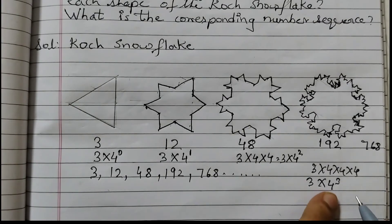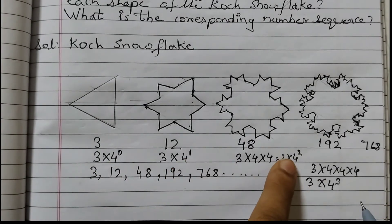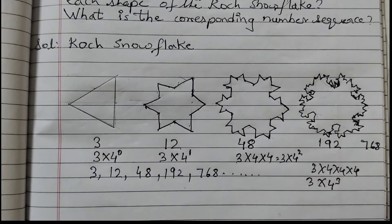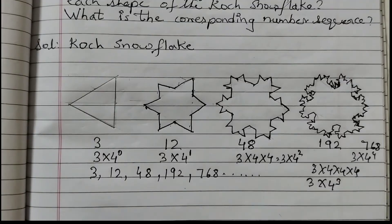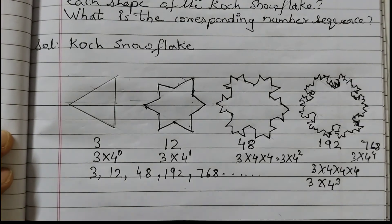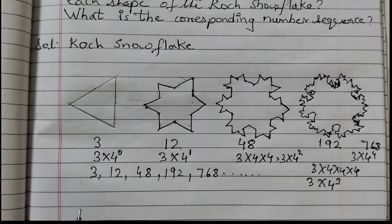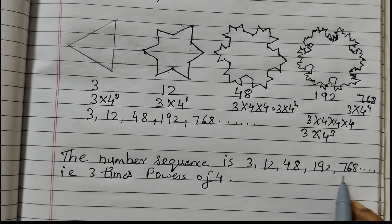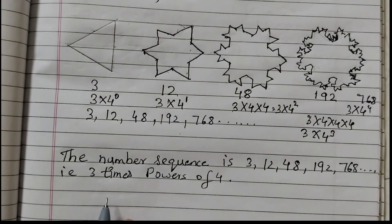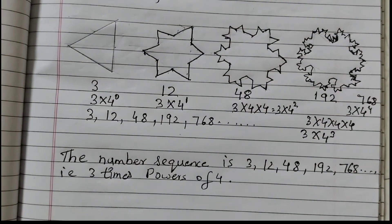How many times we are multiplying 4 comes as a power: power zero, power one, power two, power three. For the next one it will be 3 into 4 to the power of 4. So this is the rule that we follow to make the shapes of this given sequence. You can write the number sequence as 3, 12, 48, 192, and so on — that is 3 times powers of 4. I hope it is clear to you, thank you.